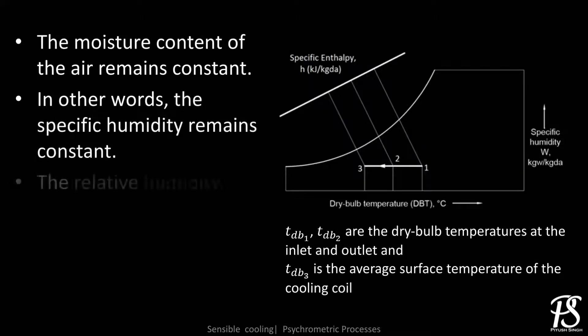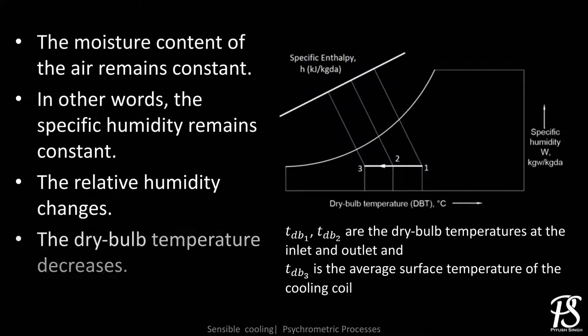As there is no addition or rejection of moisture, the specific humidity remains constant during the drop in the dry bulb temperature. However, as the final point moves closer to the saturation line, the relative humidity of air increases.